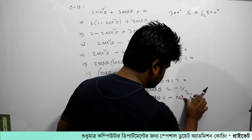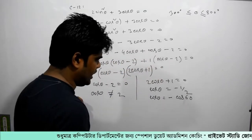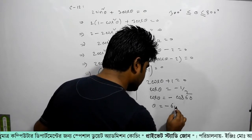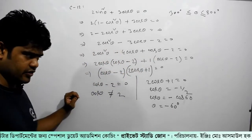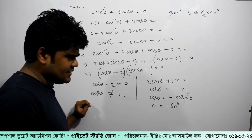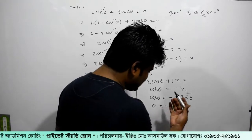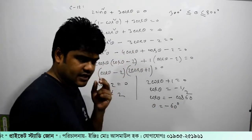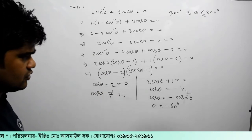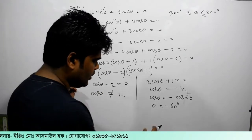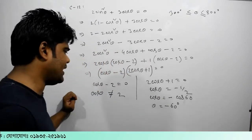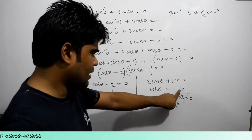Cos(60 degrees). So theta is minus 60 degrees. Minus 60 degrees. So minus 60 degrees — but we note that theta is not simply equal to 60 degrees. Now we are going to do that: the point of 60 degrees. We are going to target this — 60 degrees. Minus 60 degrees.